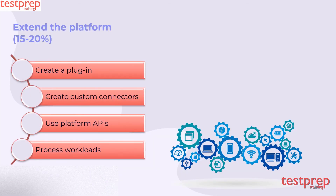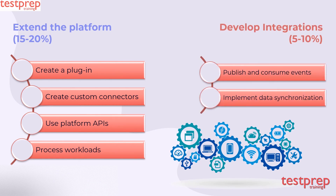Domain 6: Extend the platform, which comprises 15 to 20 percent weightage in the exam. It includes: 1. Create a plugin. 2. Create custom connectors. 3. Use platform APIs. 4. Process workloads. Domain 7: Develop integrations, which comprises 5 to 10 percent weightage in the exam. It includes: 1. Publish and consume events. 2. Implement data synchronization.